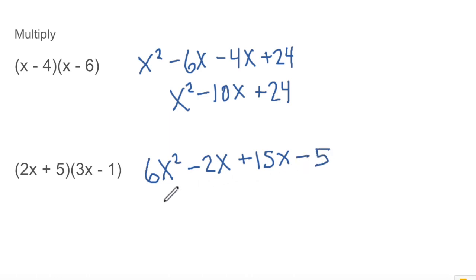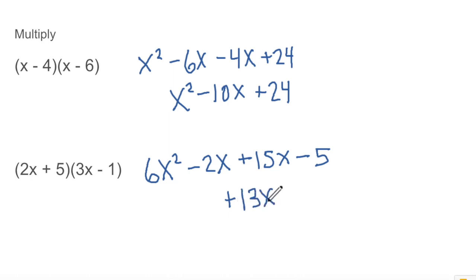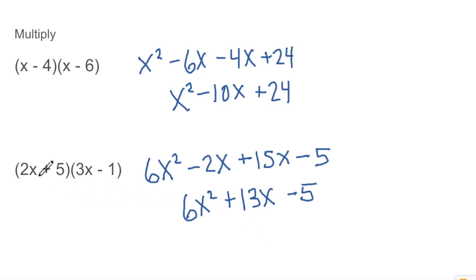And then the last: we have 5 and negative 1, so that multiplied together gives us negative 5. When we combine like terms — negative 2x and positive 15x gives us positive 13x. So we have our 6x squared term, plus 13x, minus 5. That is the product when we multiply those two binomials together.